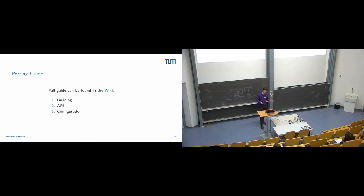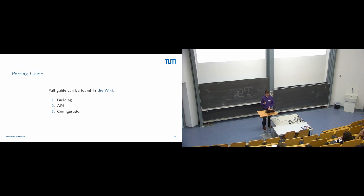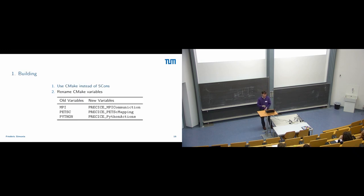Now comes the porting guide, most important for those who still use old versions of preCICE. The porting guide can be found in the wiki and consists of three parts: building, API, and configuration. For building: remove SCons, forget about it, and use CMake. We do not support SCons anymore and will not answer any requests about it. We also changed CMake variables from the old choices to the newer, more expressive ones.